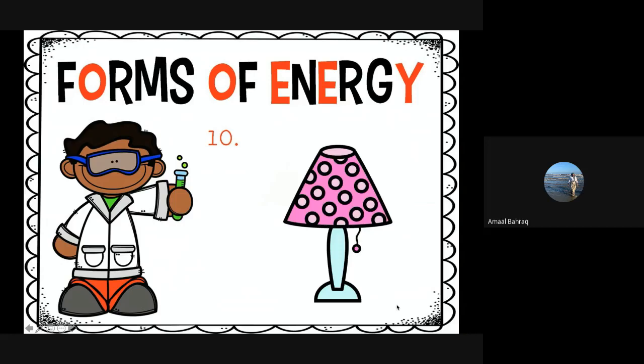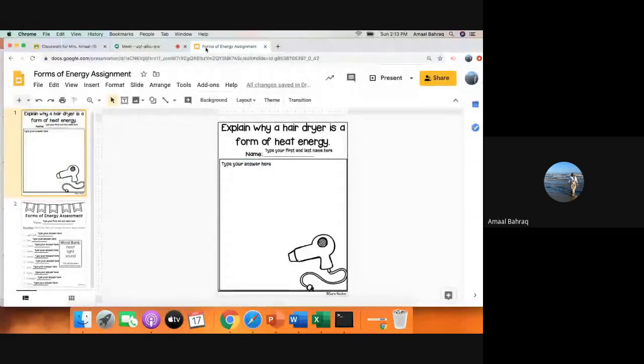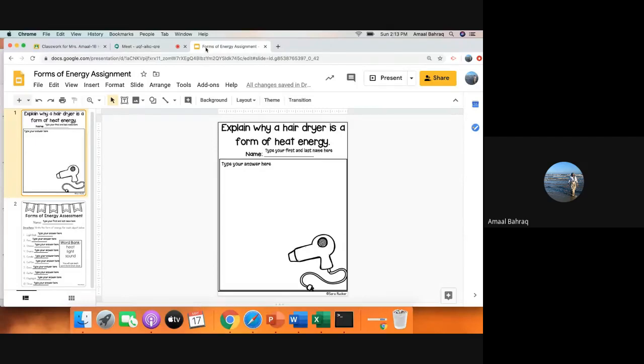So boys and girls, today for your assignment, I'm going to take you back here. For your assignment, it says Forms of Energy. There are two things you need to do. The first says explain why a hair dryer is a form of heat energy. How is a hair dryer heat energy?